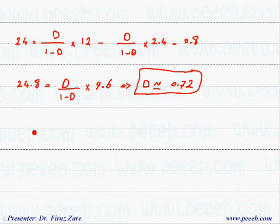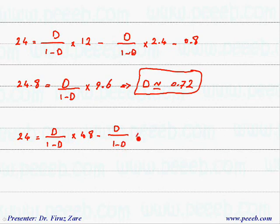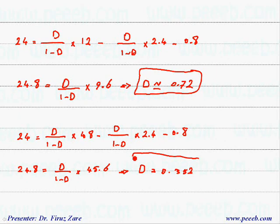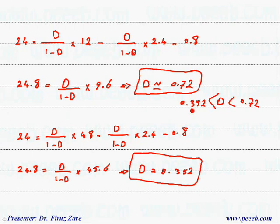For input voltage V_in = 48 volts: 24 = D/(1−D) times 48, minus D/(1−D) times 2.4, minus 0.8. This simplifies to 24.8 = D/(1−D) times 45.6, giving D = 0.352. Therefore, to control the output voltage across this input range, the duty cycle must be varied between 0.352 and 0.72.